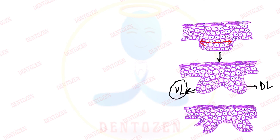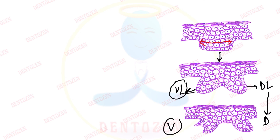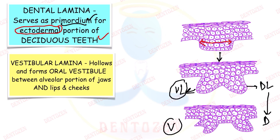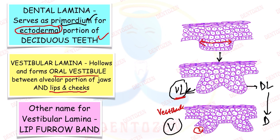Vestibular lamina will lead to the formation of the vestibule, and dental lamina will lead to the formation of deciduous teeth. Dental lamina serves as the primordium for the ectodermal portion — that means only the enamel part — of the deciduous teeth. The vestibular lamina will hollow out through degeneration of cells, creating a space called the vestibule, which is the space between our teeth and lips. The vestibular lamina is also known as the lip furrow band — another viva question.